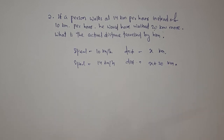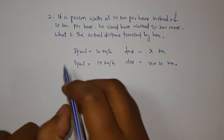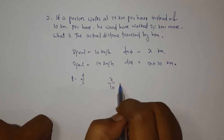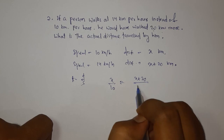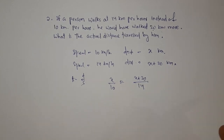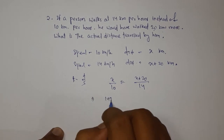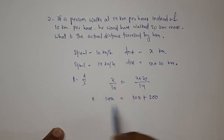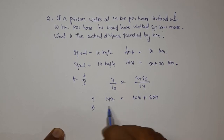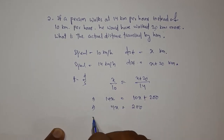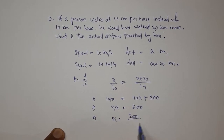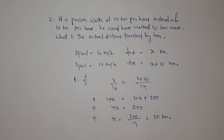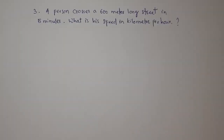Since time equals distance by speed, we set x divided by 10 equal to (x plus 20) divided by 14. Cross-multiplying: 14x equals 10x plus 200. So 4x equals 200, giving x equals 50 km. The actual distance is 50 km at a speed of 10 km per hour.